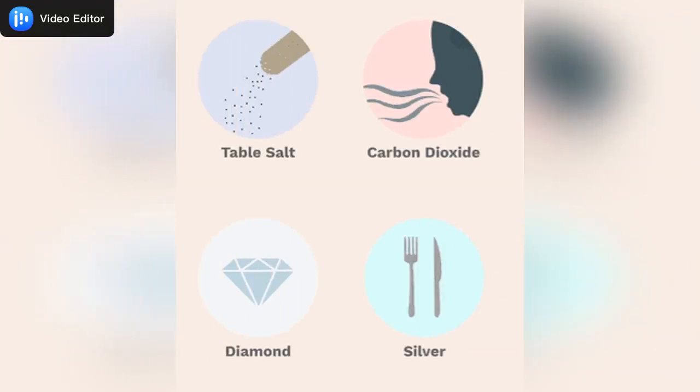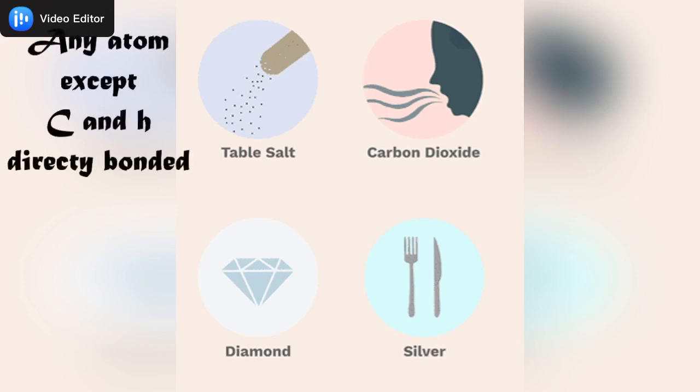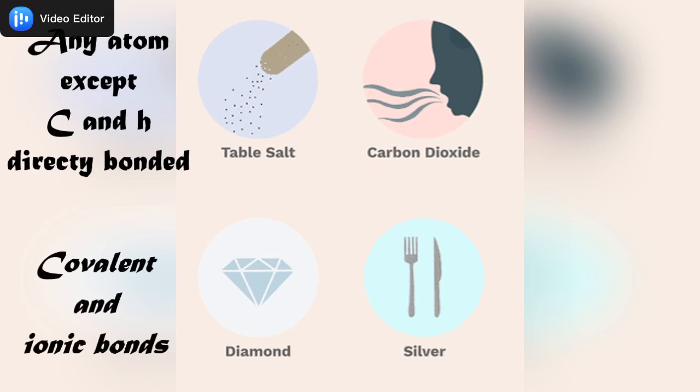On the other hand, inorganic compounds are those mostly made of any atoms other than carbon and hydrogen, or when these two are not bonded directly. Inorganic compounds can show both covalent and ionic bonds. Inorganic compounds are usually colorful and most of them can dissolve in water due to the presence of ionic bonds.